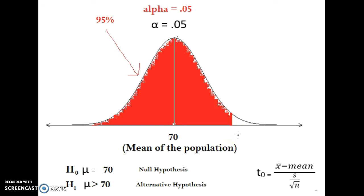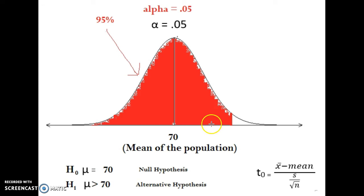There are two types of mistakes that can be made here. A type 1 error is when we get a sample way out in the tail and reject the null hypothesis, but in fact the null hypothesis was true — it was just an unusual sample. Five out of every 100 samples will produce a mean out in the tail, so 5% of the time you'll make that mistake. A type 2 error is when your sample mean falls in the 95% area so you don't reject the null hypothesis, but in reality you should have, because the real population mean actually is bigger than 70 — you just didn't have enough evidence based on that sample.